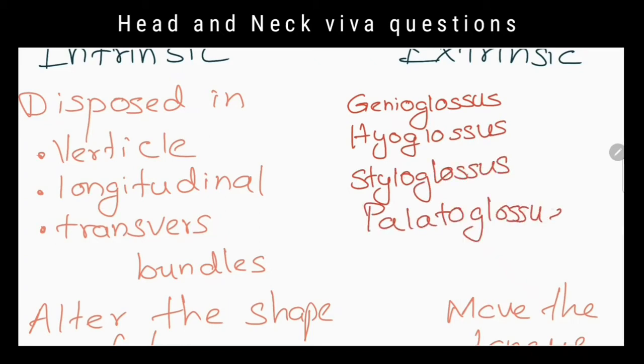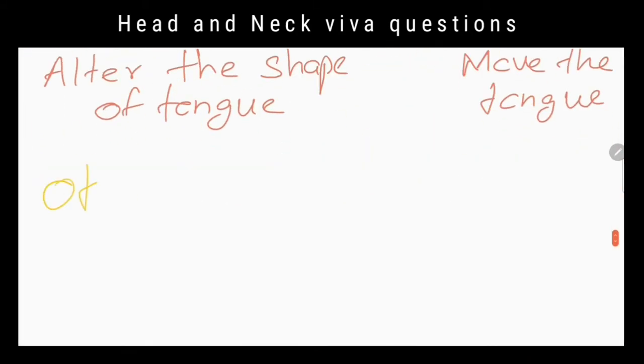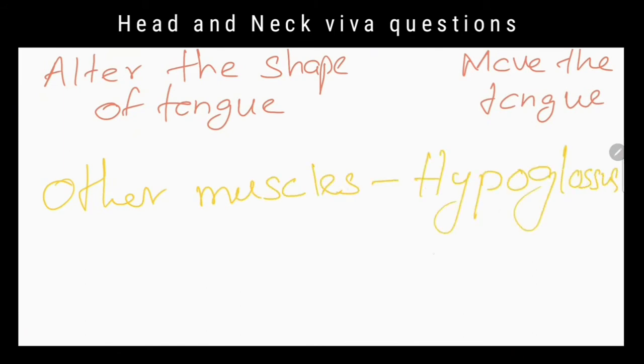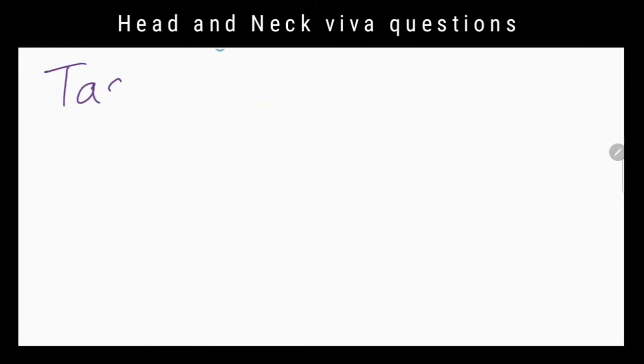Palatoglossus is supplied by the vagus nerve. Other muscles are supplied by the hypoglossal nerve.